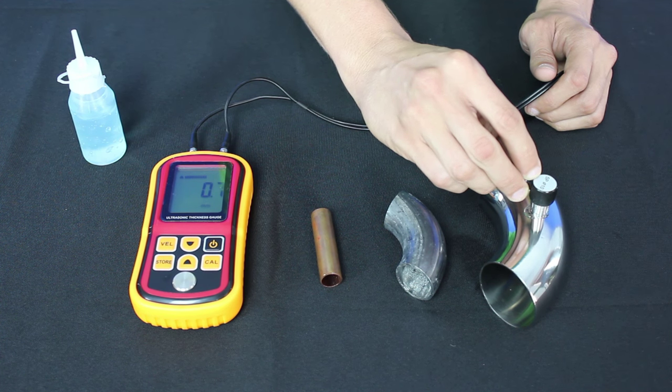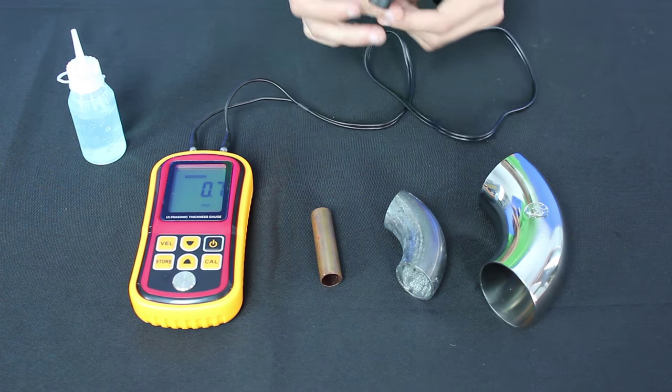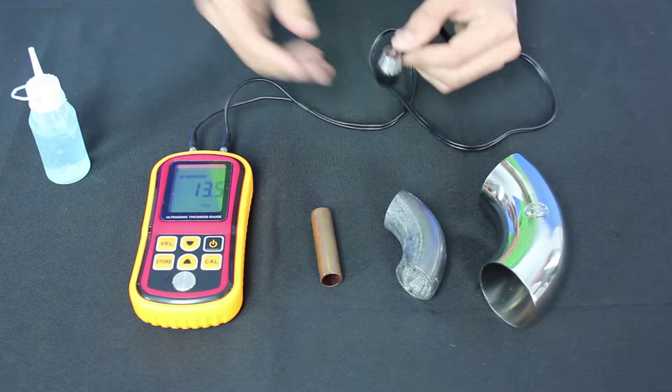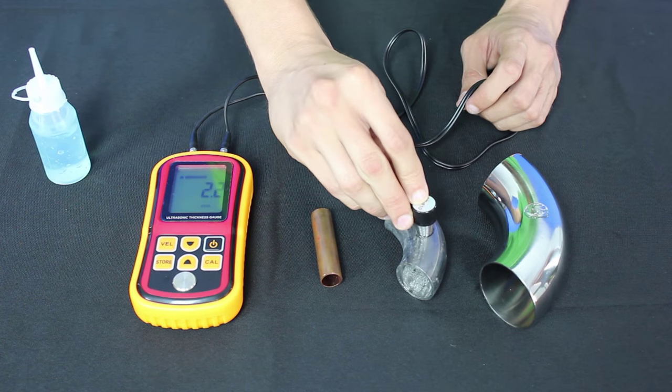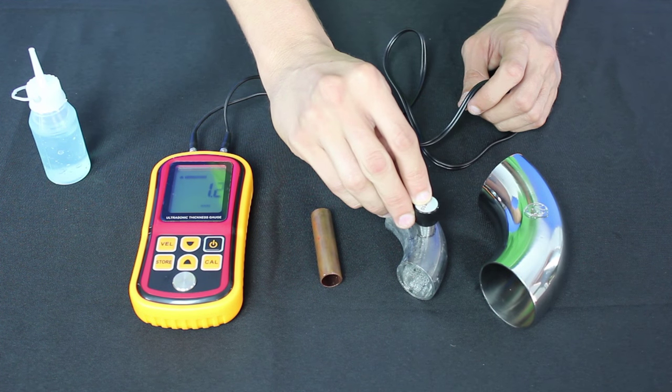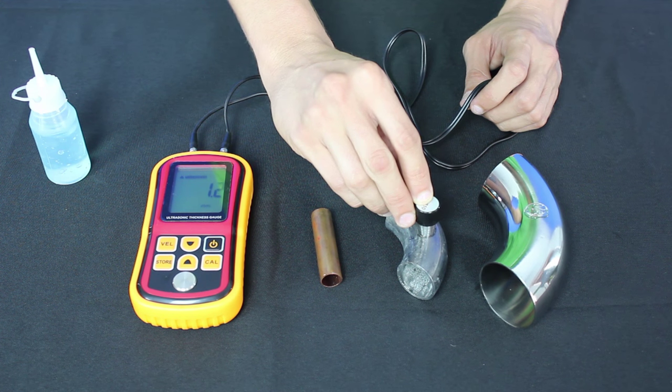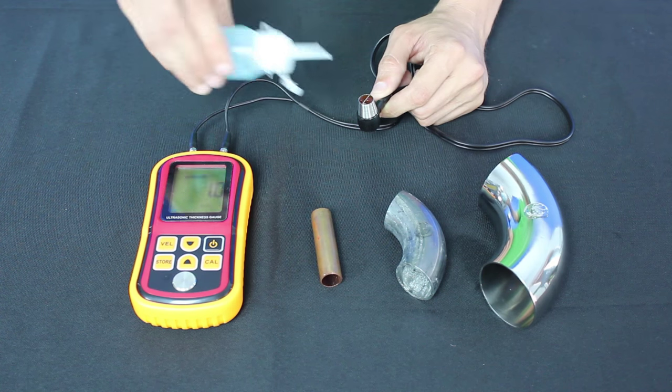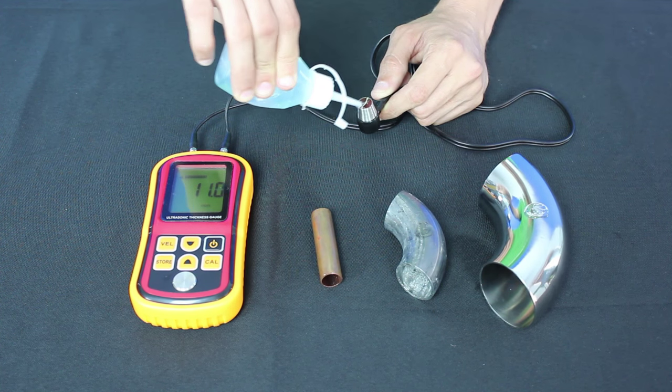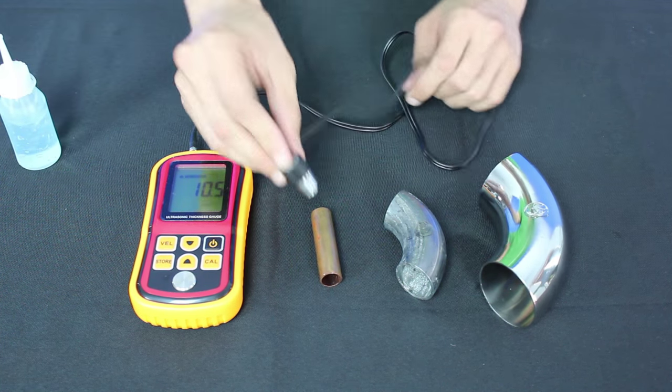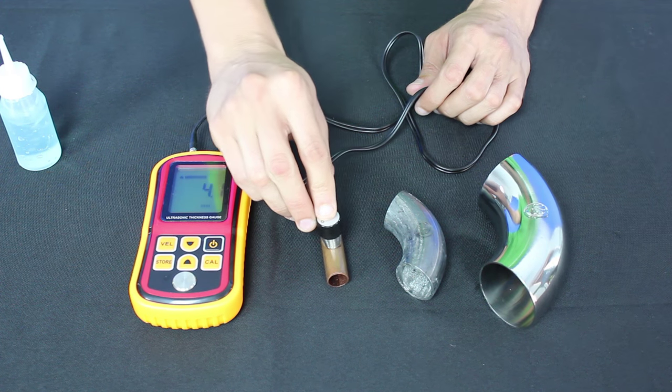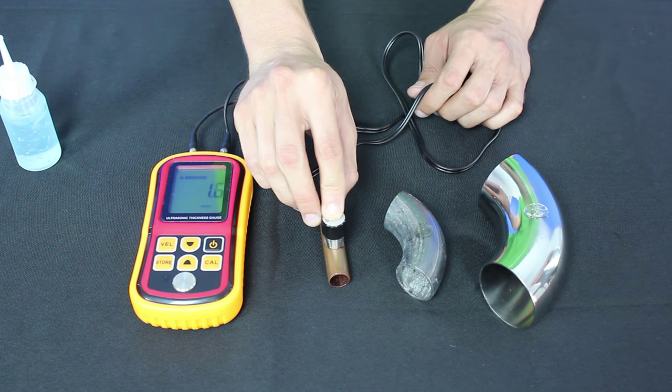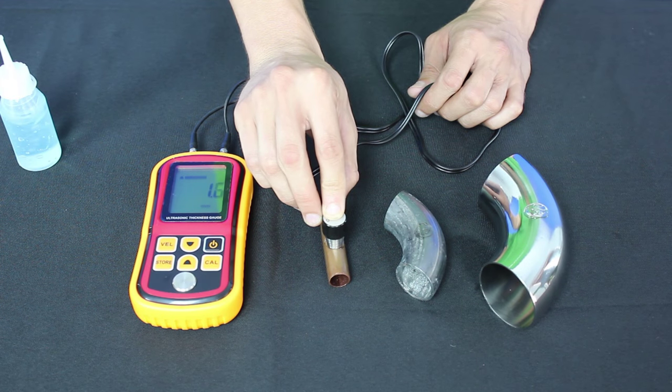So this one is 0.7 millimeters. Let's check the next one. This one is 1.2. Yep, 1.2. And let's check the copper pipe. 1.6.